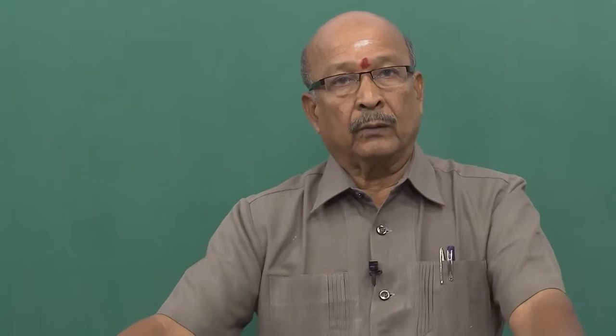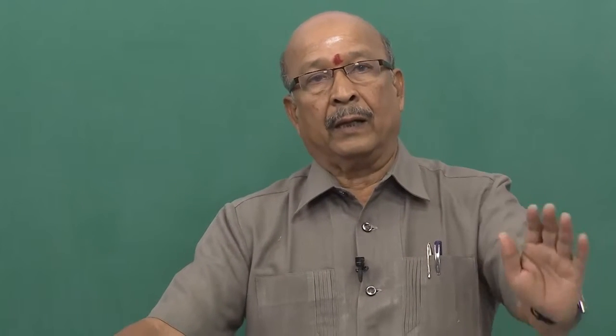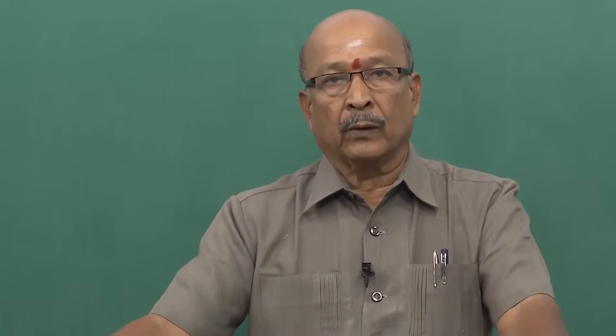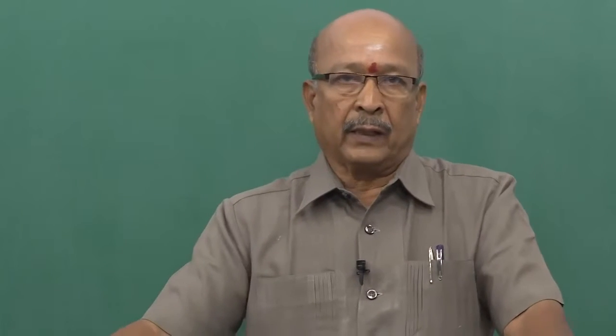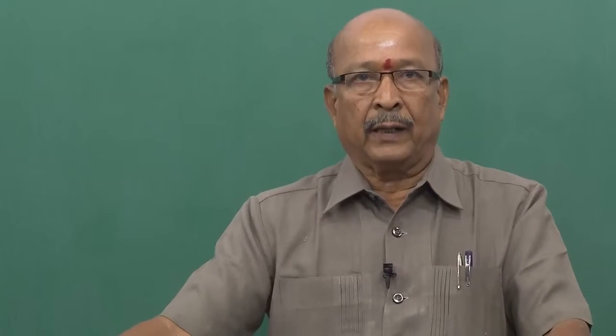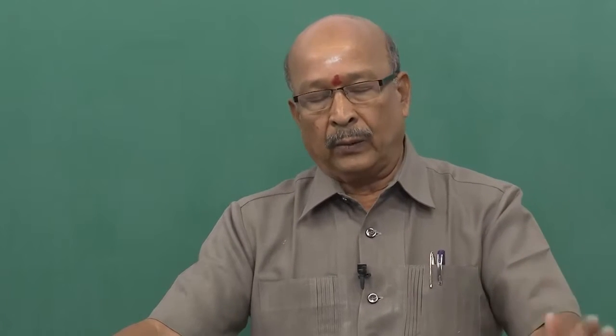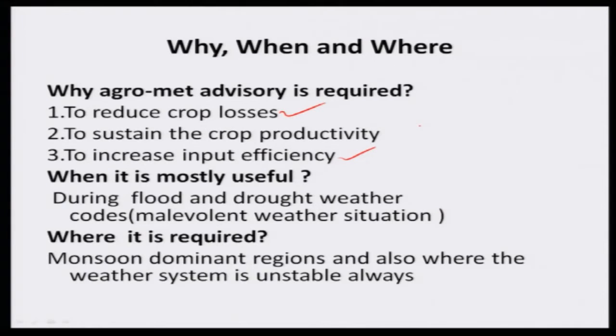When is agro advisory mostly useful? You have already learned the three weather codes: normal weather code, flood weather code, and drought weather code. Normal weather code does not require any agro advisory. When any deviation occurs from the normal situation — whether on the positive side like flood or on the negative side like drought — we need agro advisory to reduce crop production risk and sustain crop productivity. Where is it required? Monsoon dominant regions like India, Australia, and Indonesia.